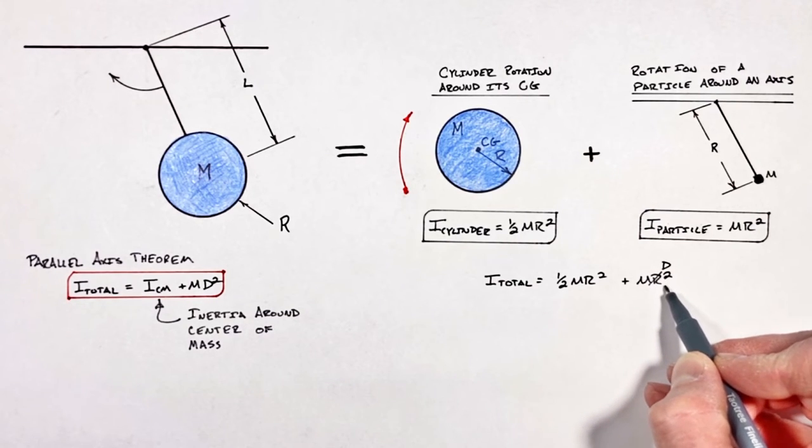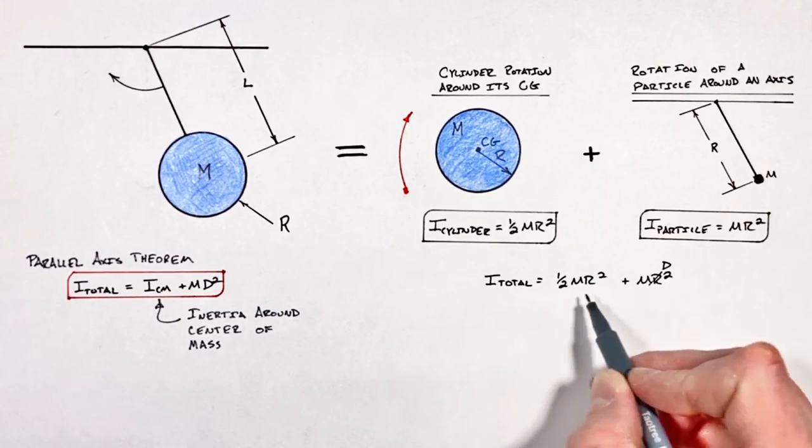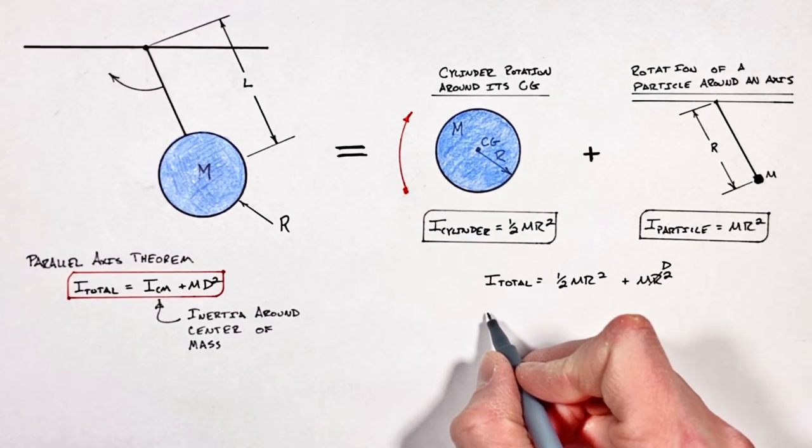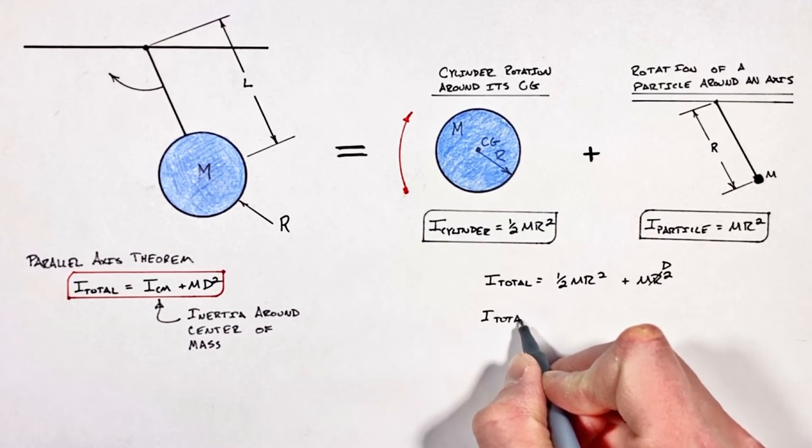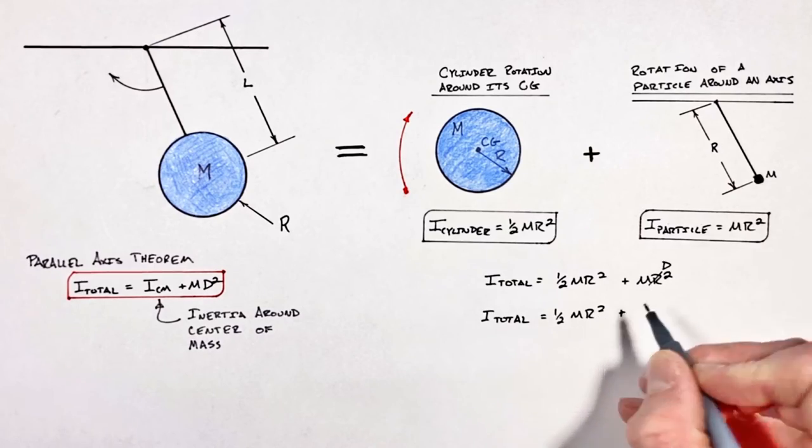because that can become confusing having two different radii in the same problem. So now going back to this situation, our total inertia is going to be given by 1/2 m r² plus